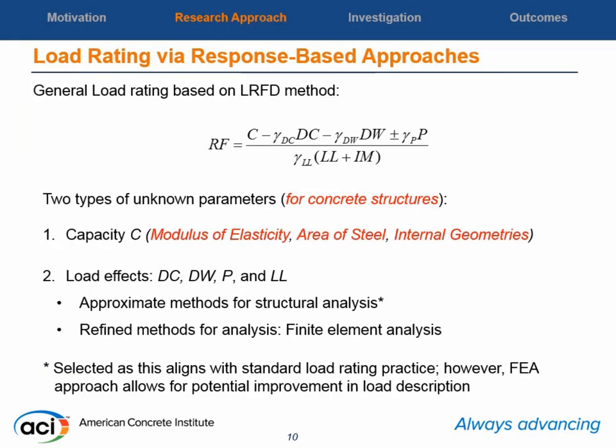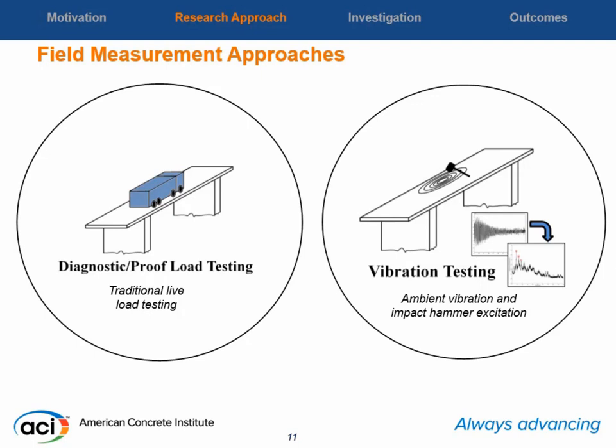There are two parameters in the load rating factor formula. The first is capacity (C), including modulus of elasticity, area of steel, and internal geometry. The second parameter is load effects, including dead load effect and live load effect. These load effects can be obtained using two methods: approximate methods for structural analysis, or finite element analysis. We selected the first method — approximate methods for structural analysis.